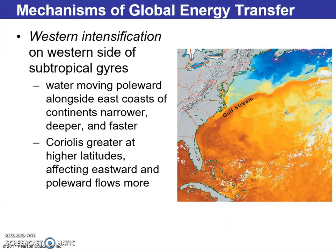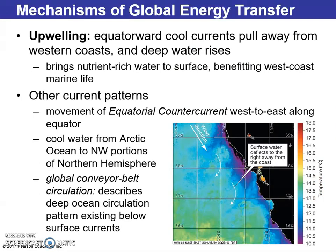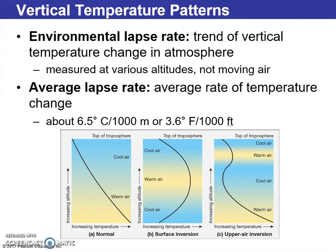Upwelling is a cool current getting pulled away from the western coast, which explains temperature anomalies and why we see long-term patterns occur. Deep water rises as surface water is pulled away. On a micro scale, this can also be referred to as turnover, similar to what happens when water heats up and cools down in a lake.